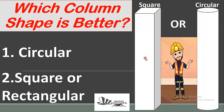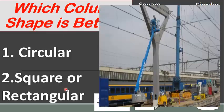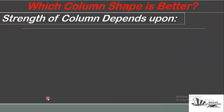There are different types of columns — circular column, square column, or rectangular column. There could also be L-shaped, T-shaped, or Y-shaped columns. The commonly used shapes are circular, square, or rectangular. However, we cannot prefer one shape over another because every shape has its own significance.